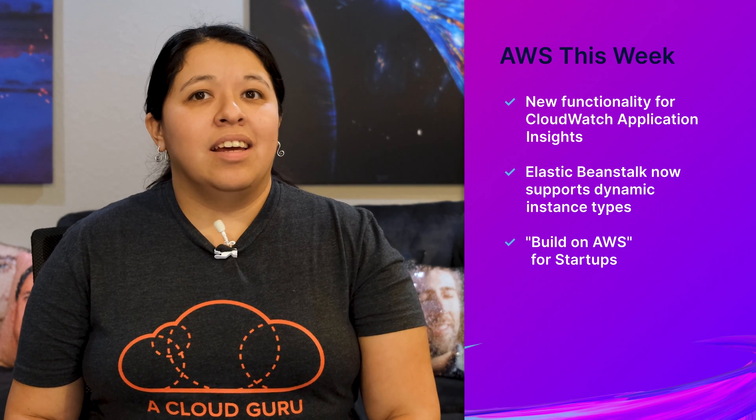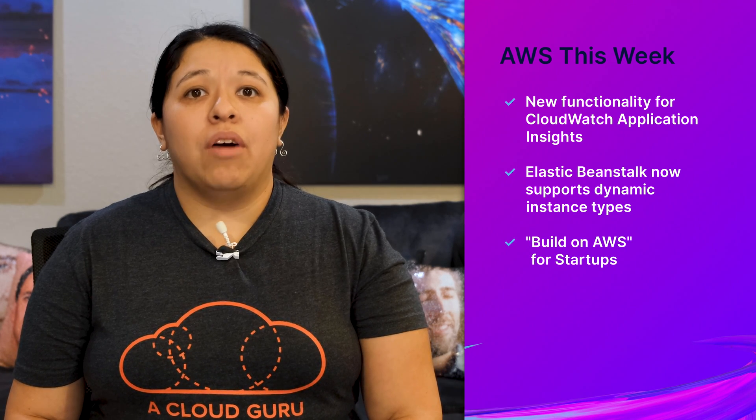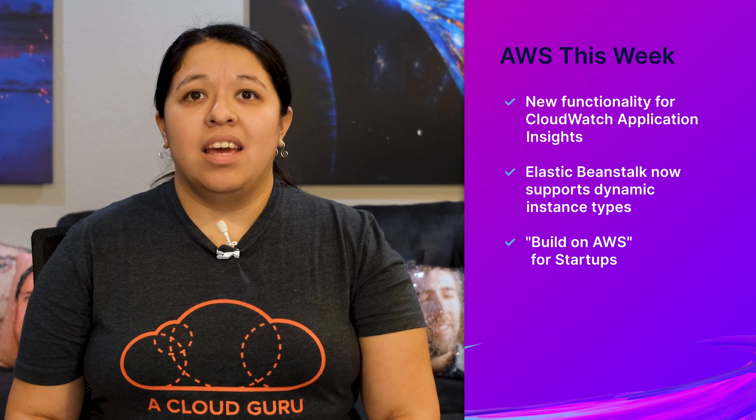Hello, Cloud Gurus! Welcome back to another AWS This Week, where we find out what goodies AWS has in store for us from the past seven days. I am your friendly neighborhood Jess Alvarez, and this week: CloudWatch Application Insights have some new functionality and a new health dashboard. Elastic Beanstalk is now supporting dynamic instance types. And finally, Build on AWS, a new offering from AWS Activate, is helping startups get their environment deployed on AWS. Stay tuned to hear the full story in this episode of AWS This Week.